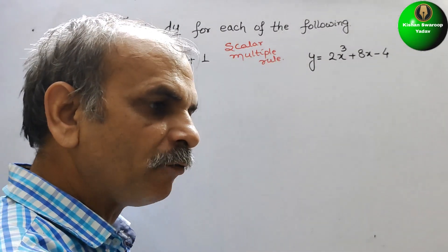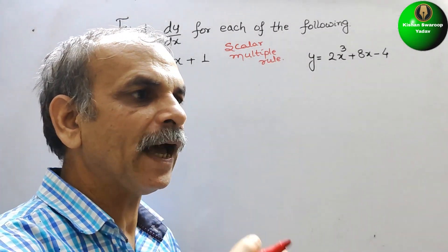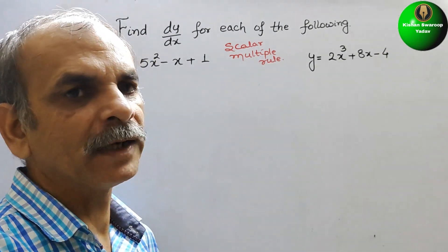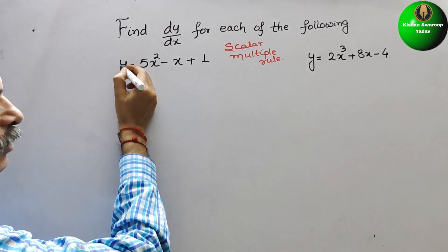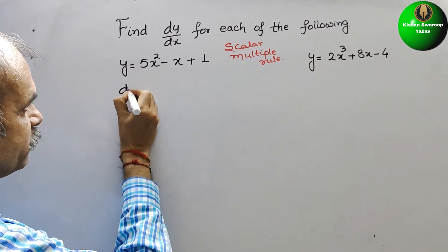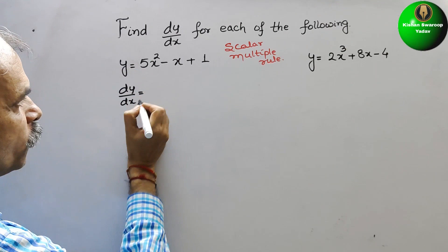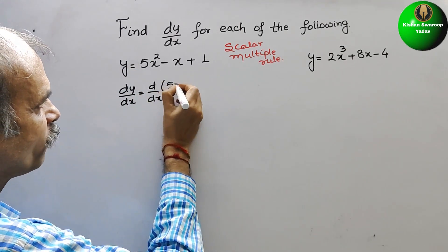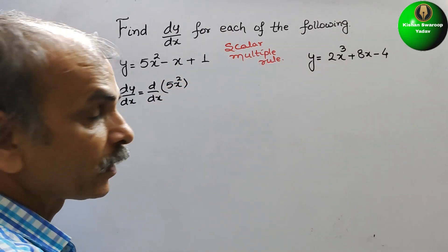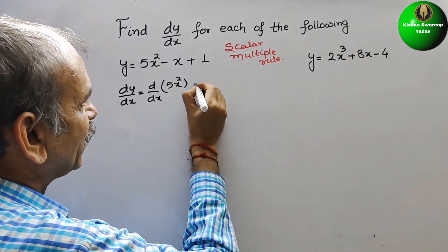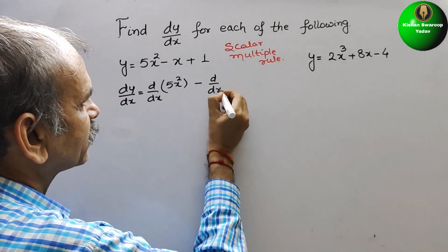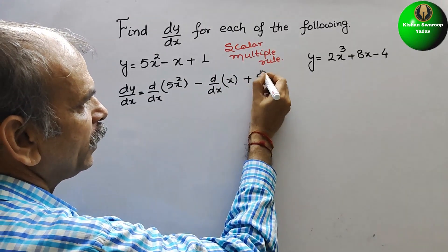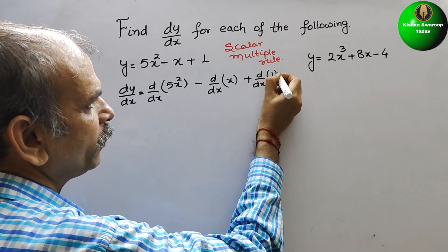It means we will split into terms and differentiate. So dy/dx will be equal to dy/dx of (5x²) minus dy/dx of (x) plus dy/dx of (1).